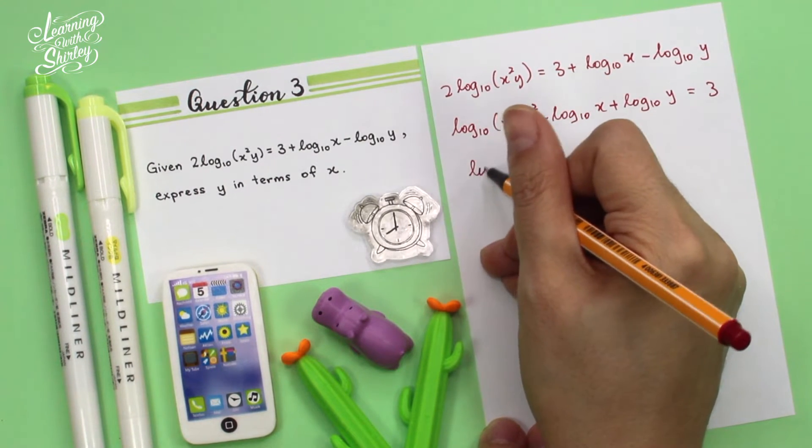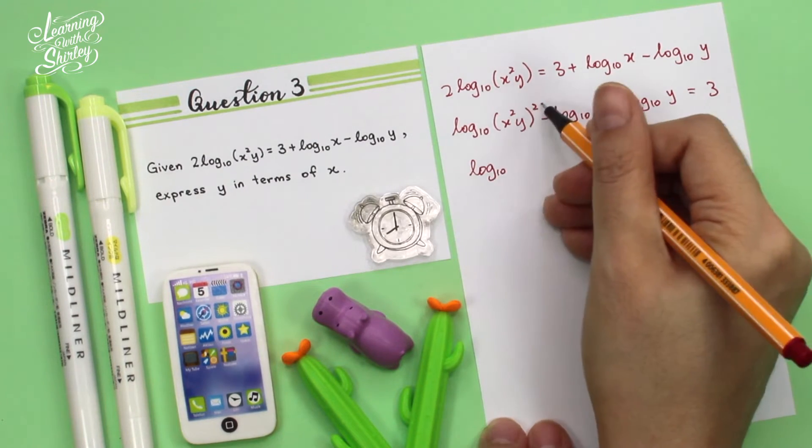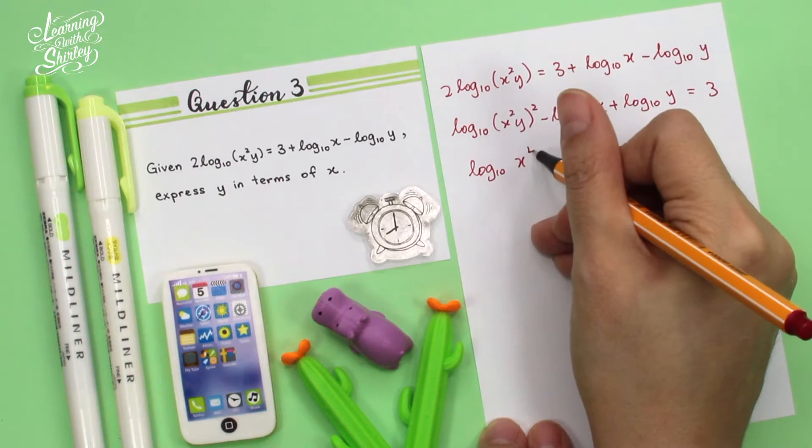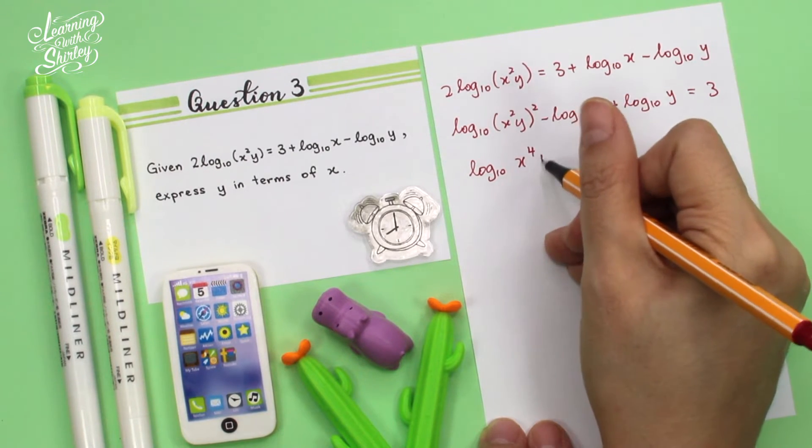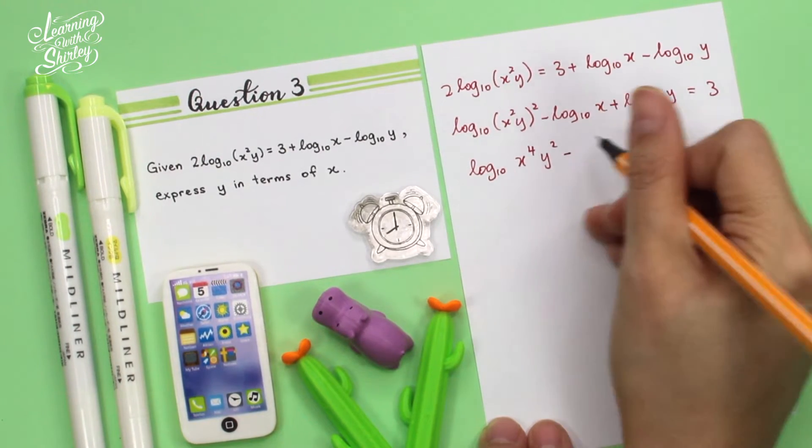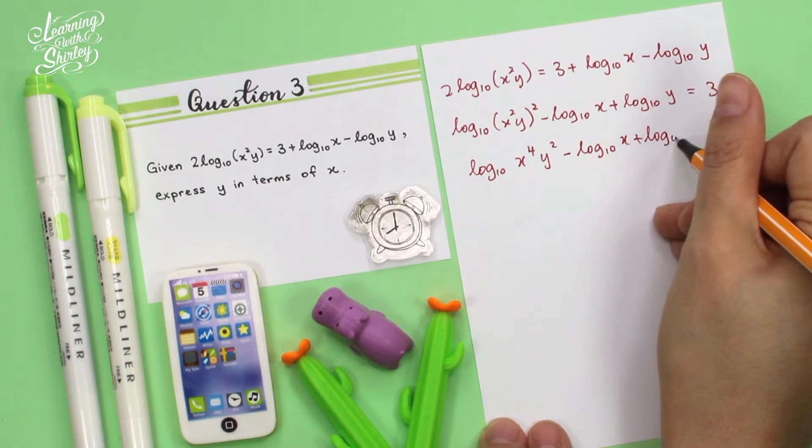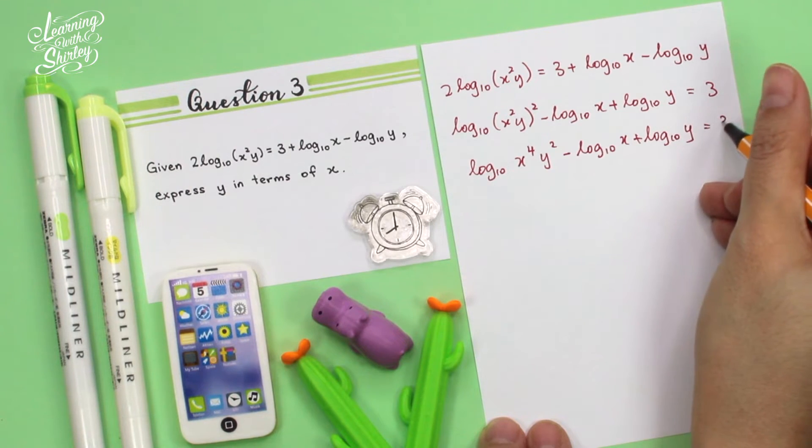Okay, and then I solve this first. So x squared, then squared outside, becomes x to the power of 4. And then y squared times y squared. Then minus log x plus log y equals 3.